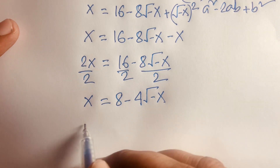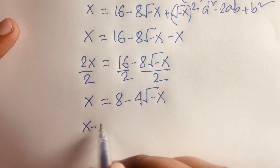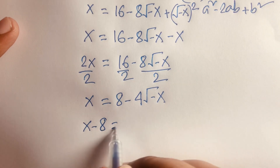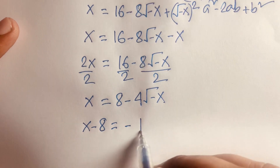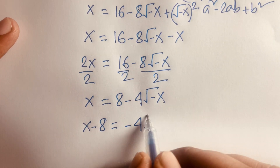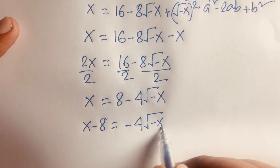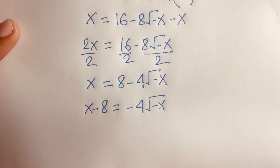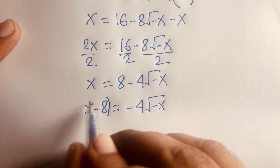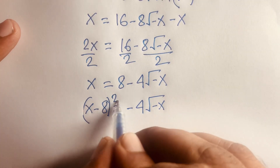Rearranging gives x − 8 = −4√(−x). I then apply a whole square to both sides again.